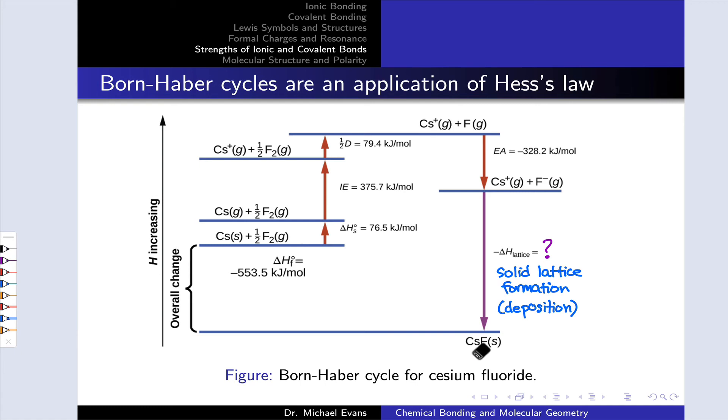So for example, we can start with solid cesium fluoride, apply decomposition to get it back to elemental cesium and half a mole of elemental fluorine. We can sublime the cesium solid to get it in the gas phase, and then we can ionize that cesium to form cesium cation. We know the energy associated with that, that's the ionization energy of cesium.